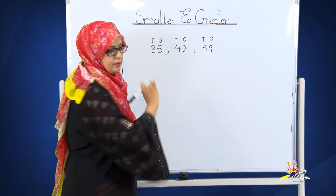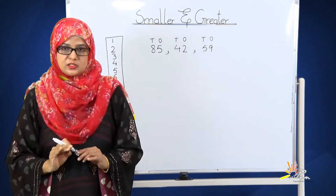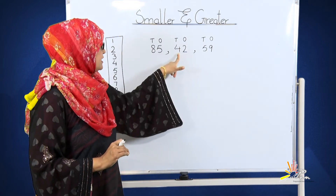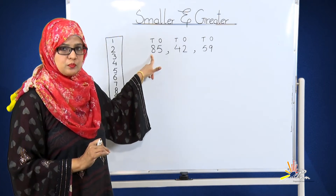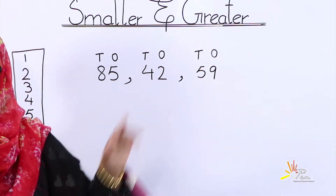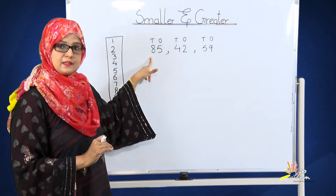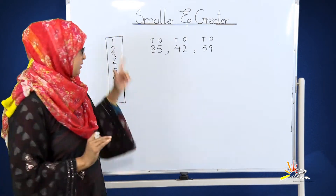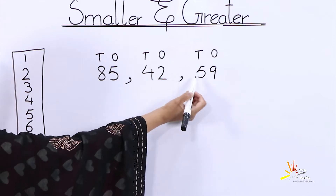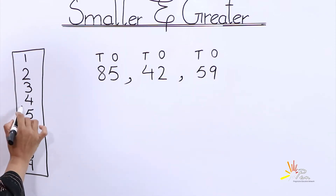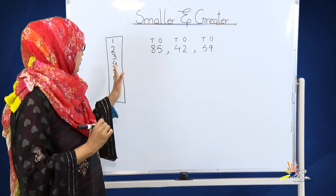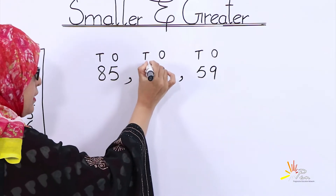The procedure is: you will observe the numbers which are standing on the tens place. The numbers we have on the tens places are eight, four and five. Now we will look at these numbers in this table. The number that comes first in this table will be considered the smaller number. We found four first, so this number will be considered smaller.